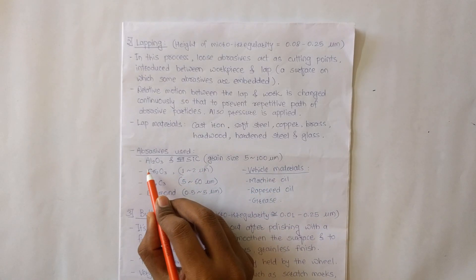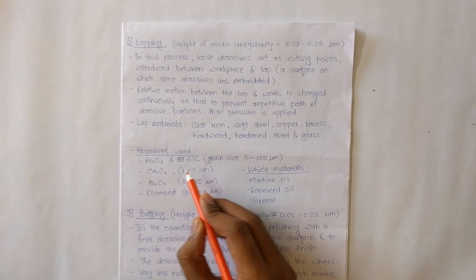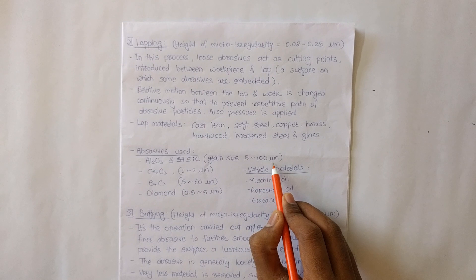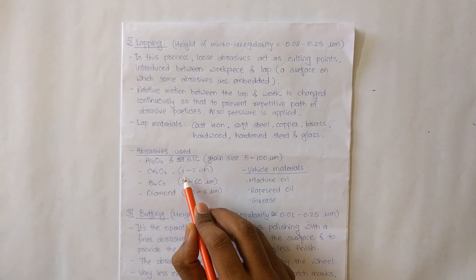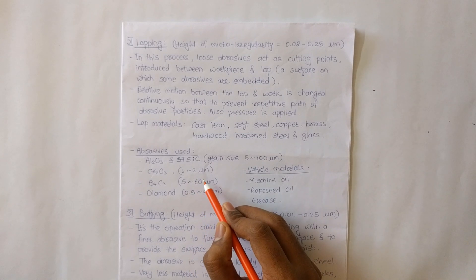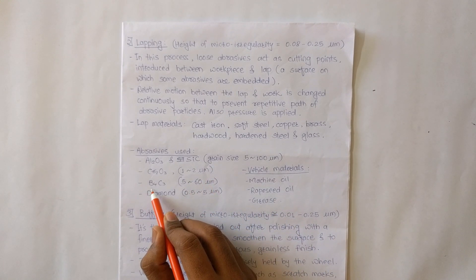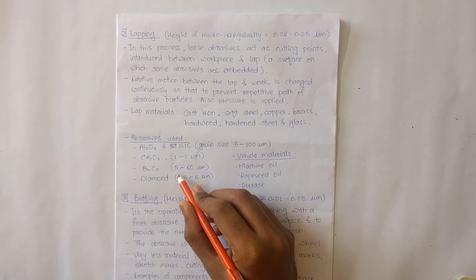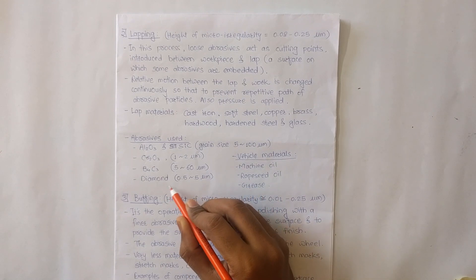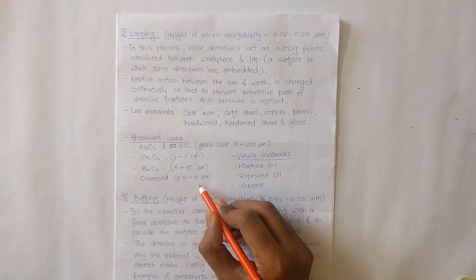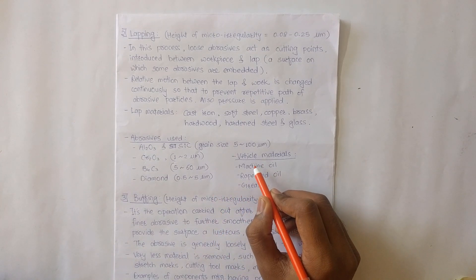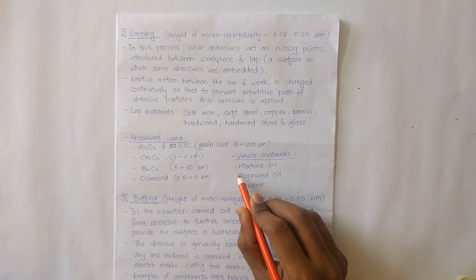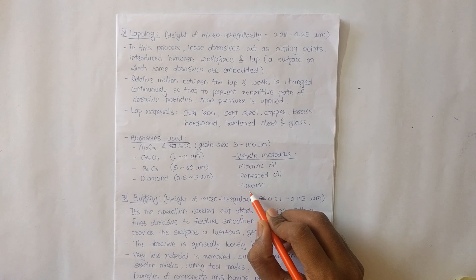Abrasives used in lapping include aluminum oxide and silicon carbide with grain sizes 5 to 100 micrometers, chromium oxide ranging from 1 to 2 micrometers, boron carbide with grain size 5 to 60 micrometers, and diamond with size 0.5 to 5 micrometers. Vehicle materials include machine oil, rapeseed oil, and grease.